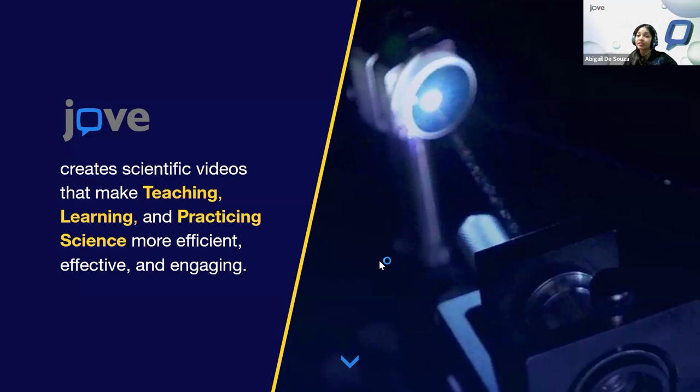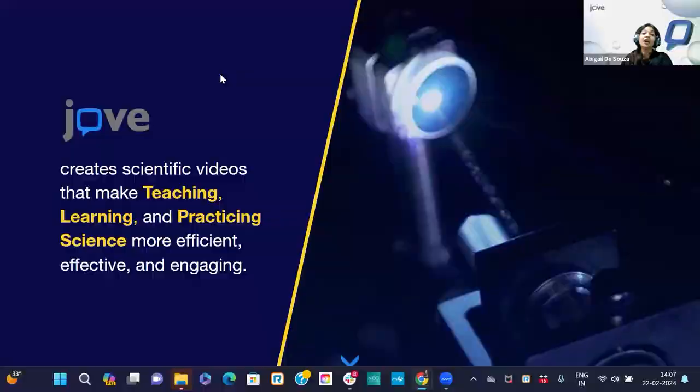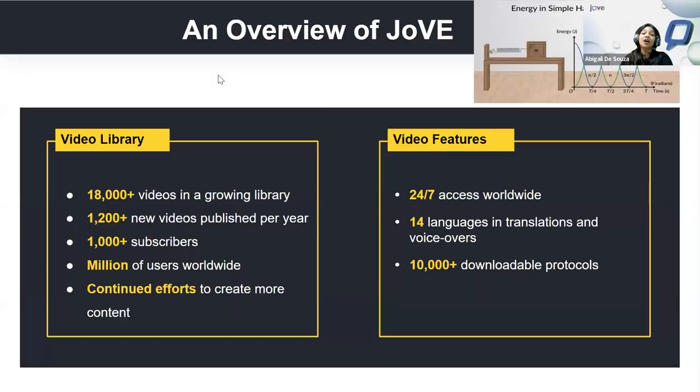Where are we today? We have around 18,000 videos in our library, with around 1,200 videos published every year, and 1,000 plus subscribers across the globe. Our videos are accessible worldwide 24 by 7, and they are available in 14 different languages in translations and voiceovers. JoVE is truly a growing library.